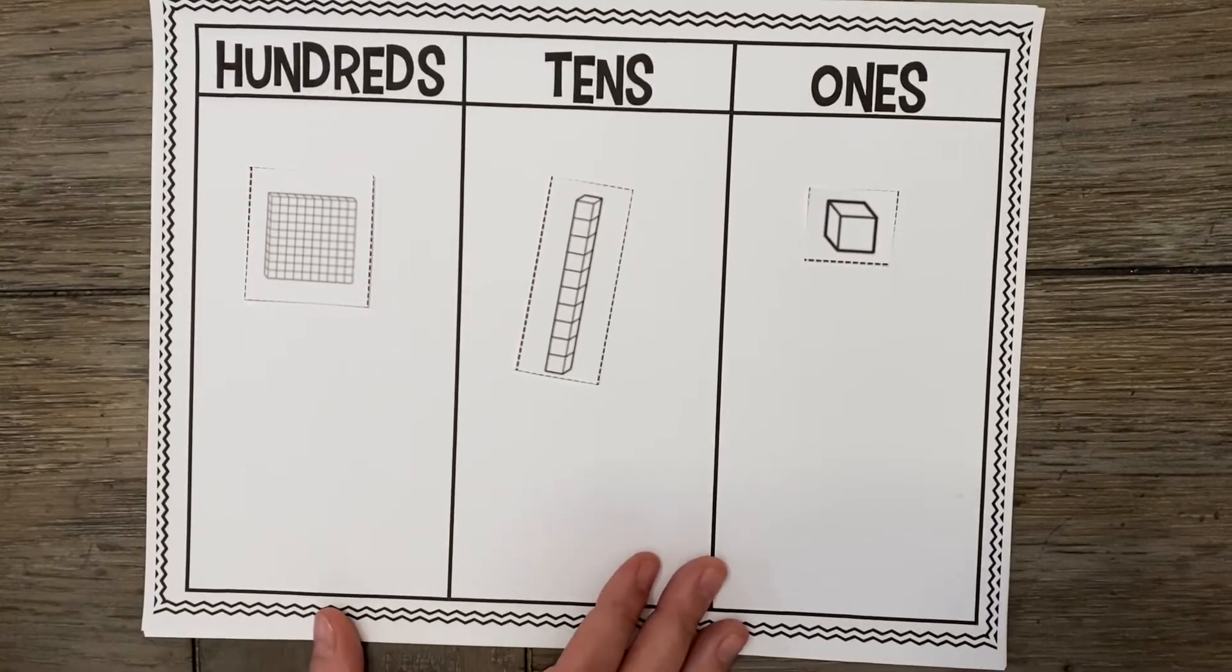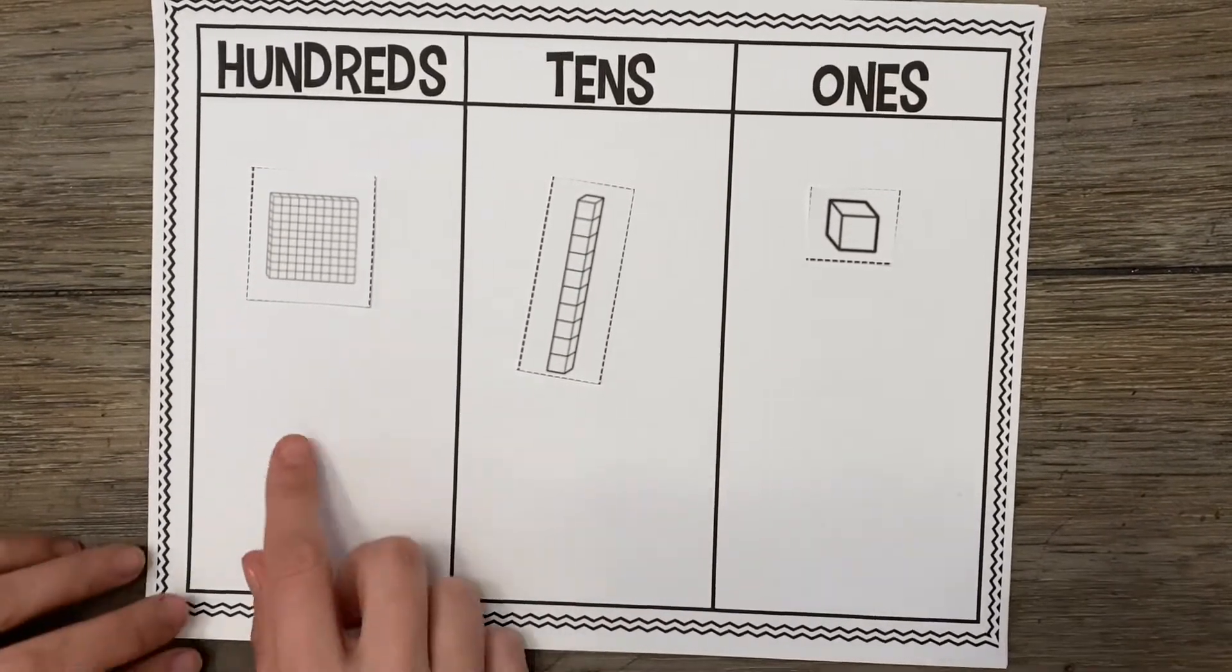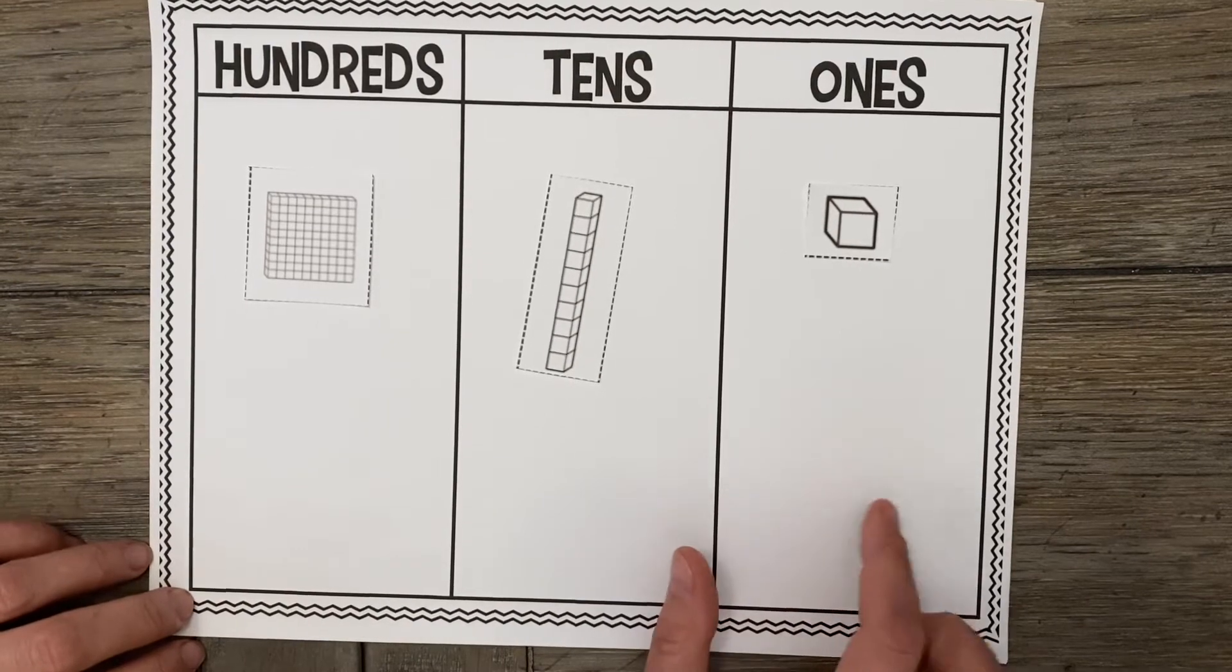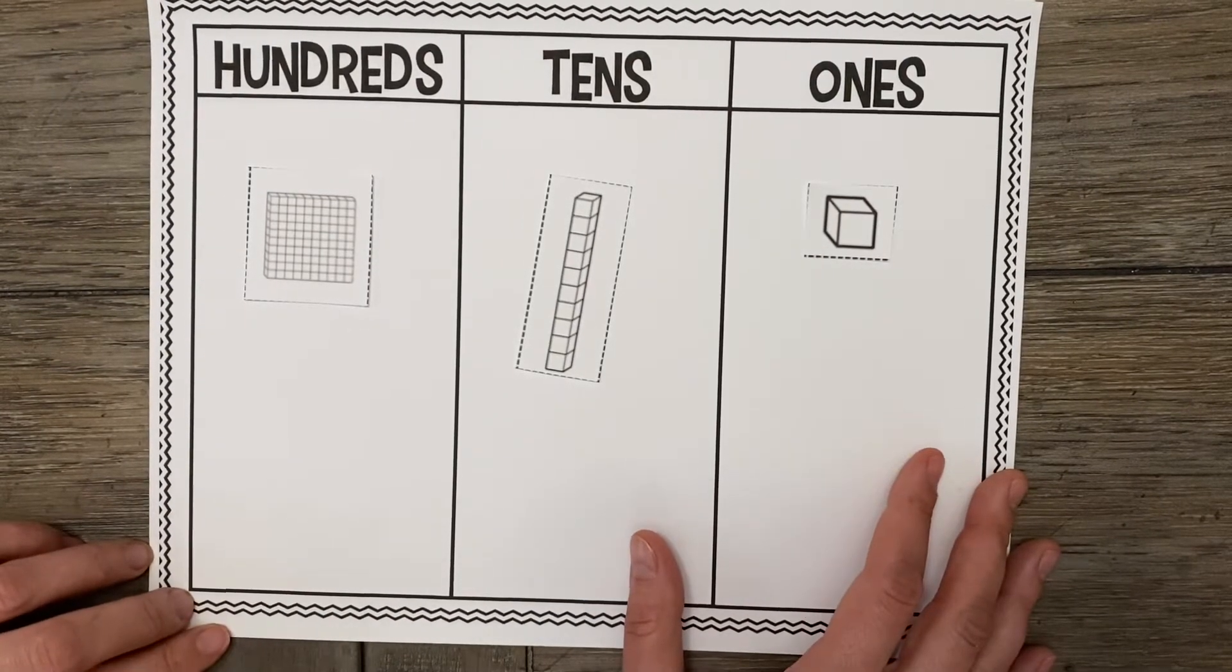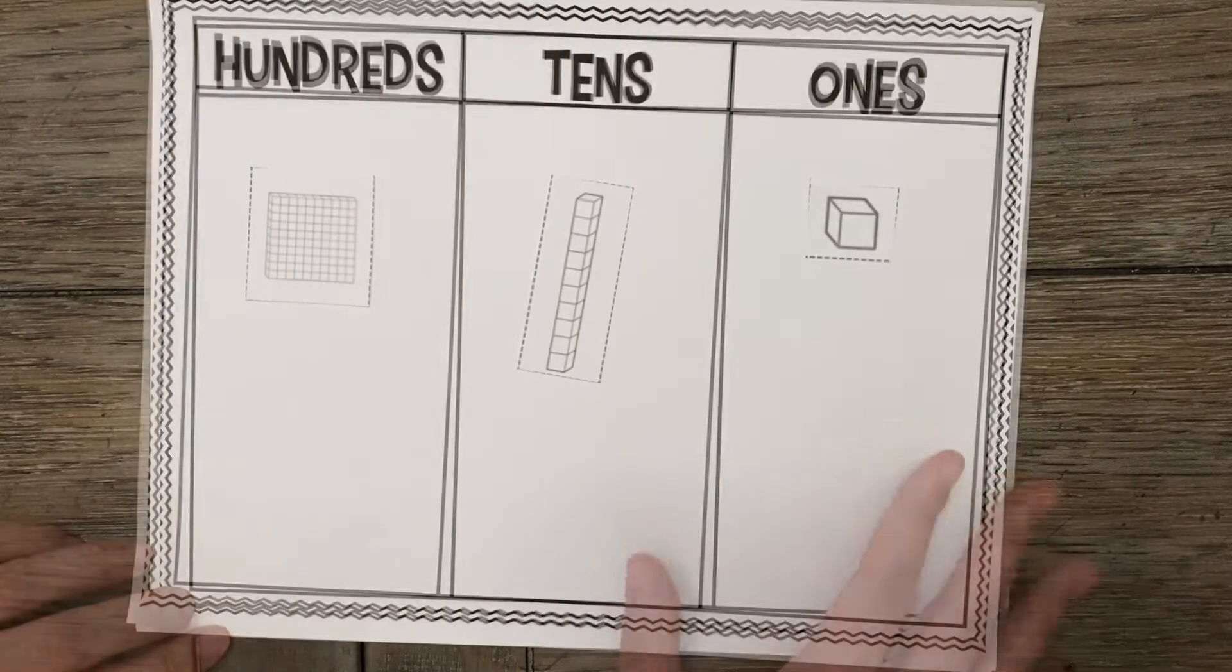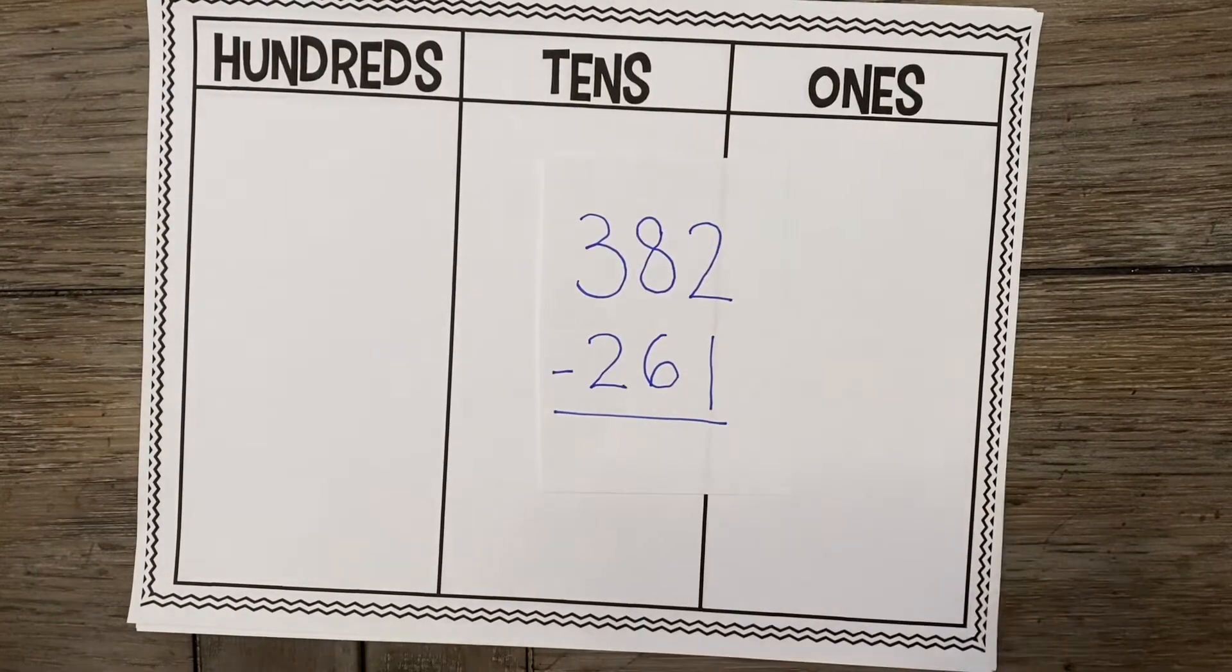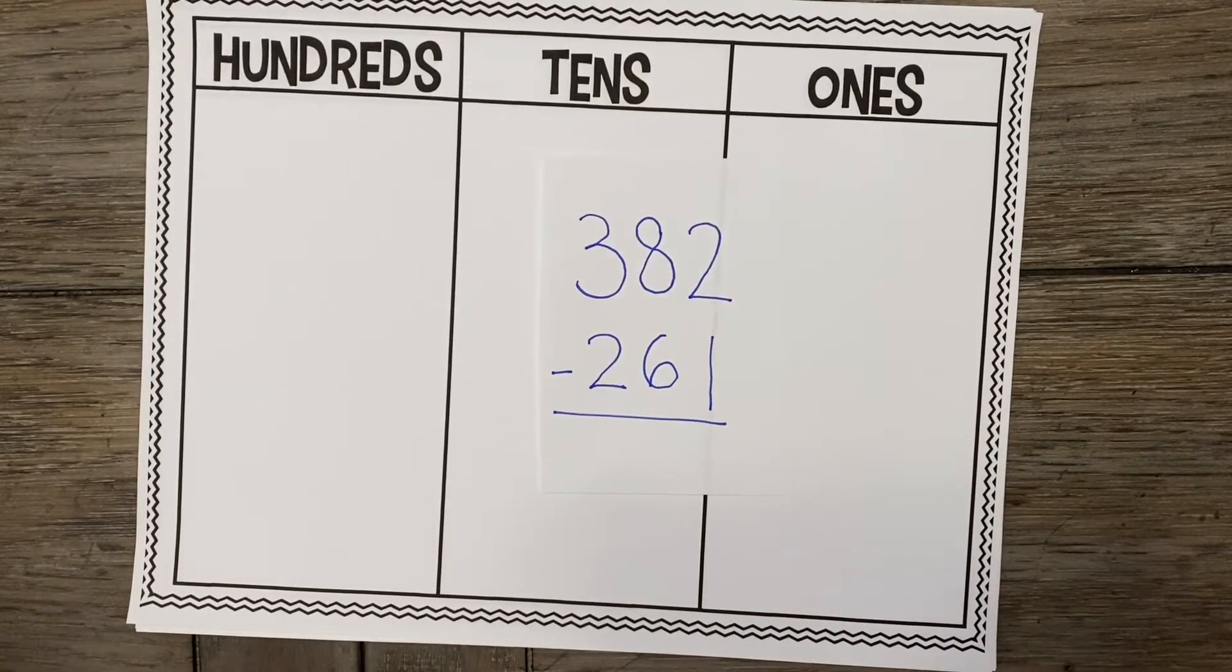Okay, so again, here we have our 100s, our 10s, and our 1s, and again, we are not going to be doing any sort of regrouping today. We are going to start off with the problem 382 minus 261.